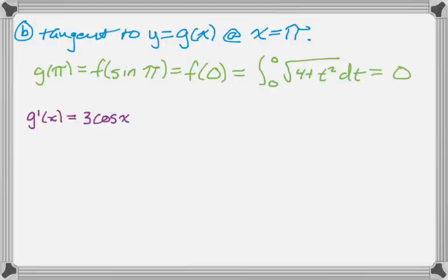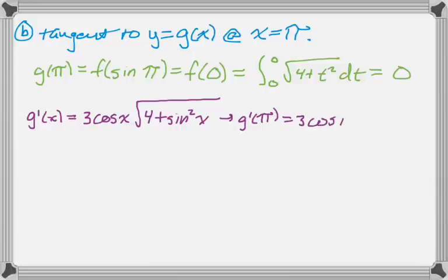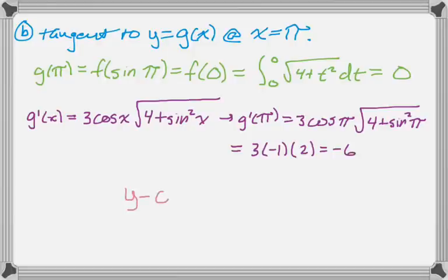And we need g prime of pi. So g prime of x was 3 cosine of x radical 4 plus sine squared of x. So we're going to plug in pi everywhere we see an x to get this. And then we know that the cosine of pi is negative 1. And the sine of pi is 0, so square root of 4, which is 2. So negative 6. And point-slope form.